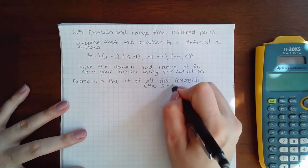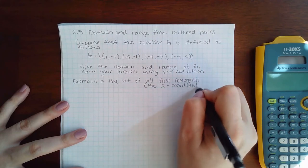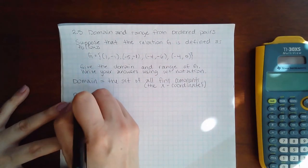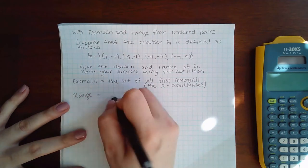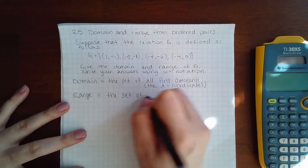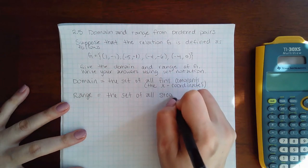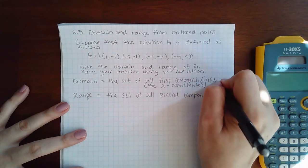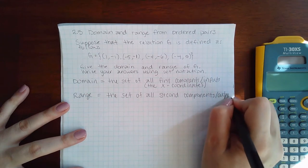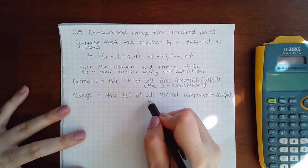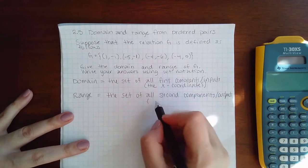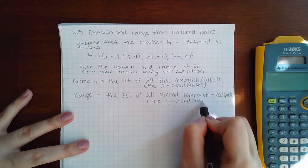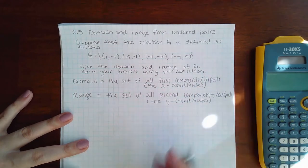Because we are given coordinates (X,Y), the range is the set of all second components. You can also think of this as inputs and outputs, which will become important later when we get more into function notation. Second components for these problems are the Y coordinates.